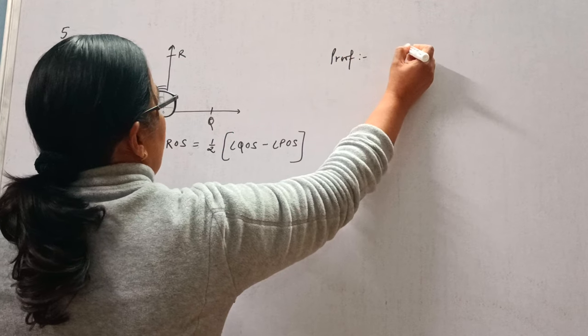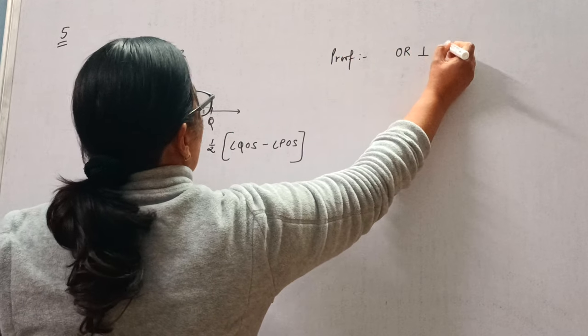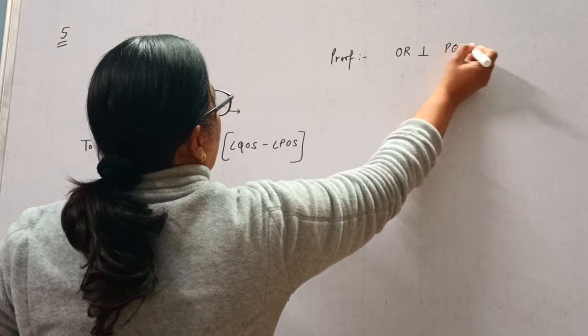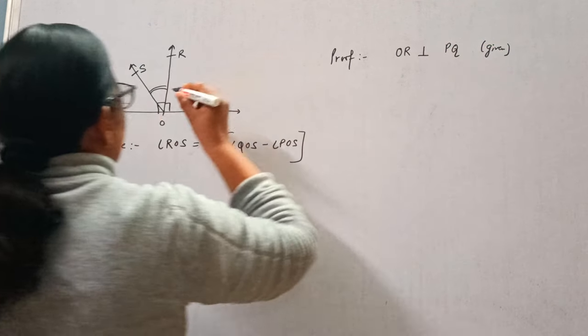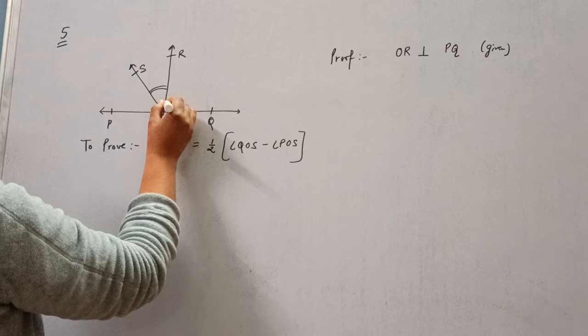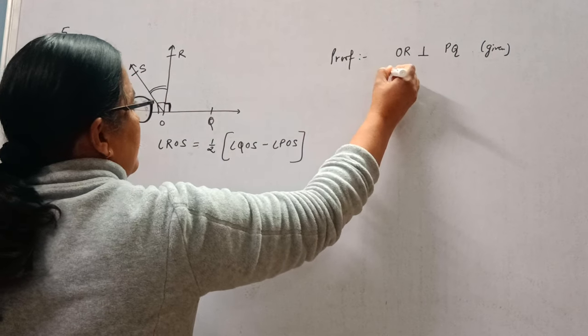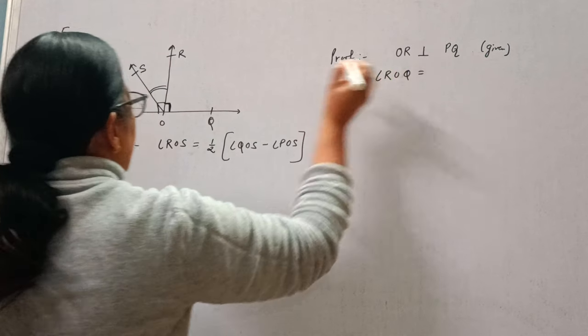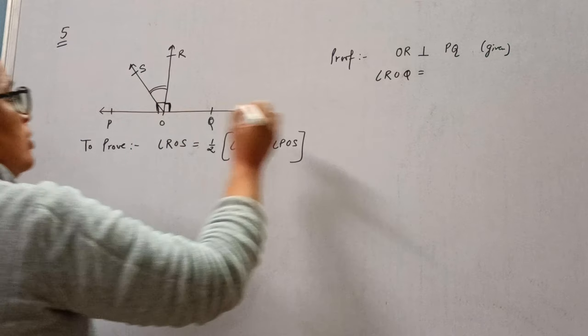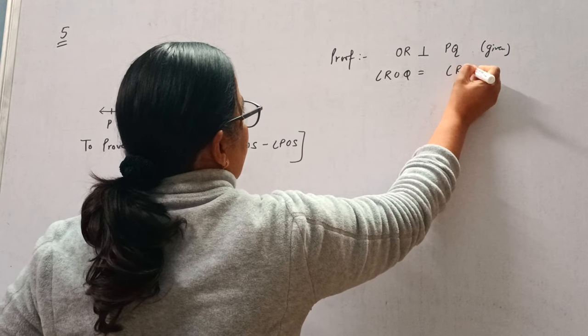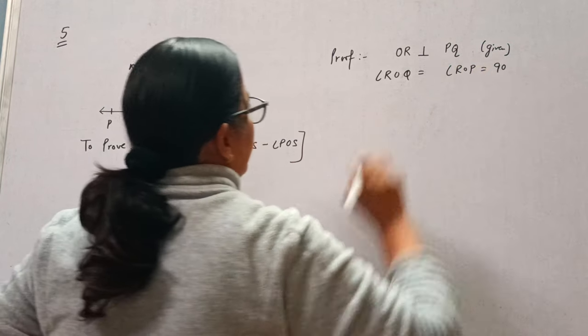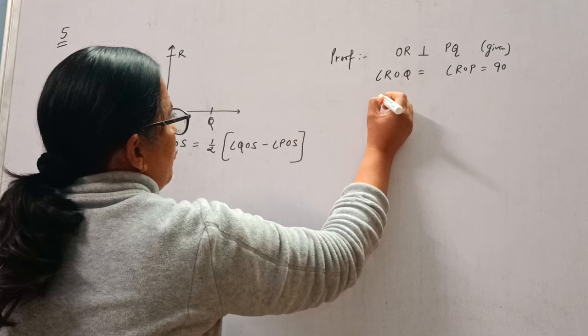First of all, see OR is perpendicular to PQ. It is given to us. So we can write angle ROQ is 90 degrees, as well as angle ROP is also 90 degrees. Both are 90 degrees. Okay, now let's first of